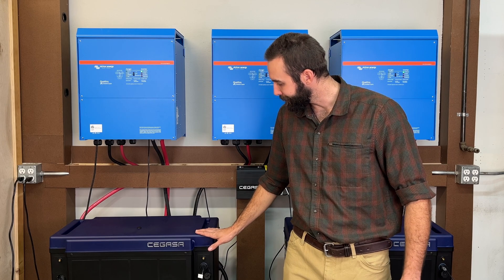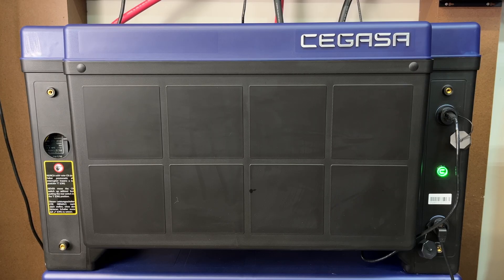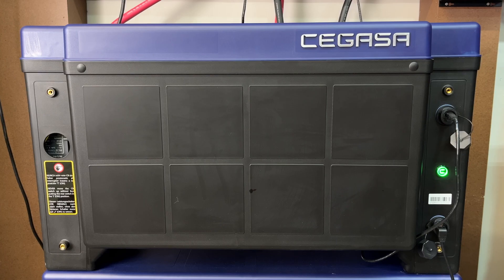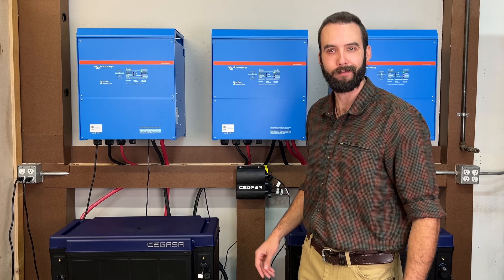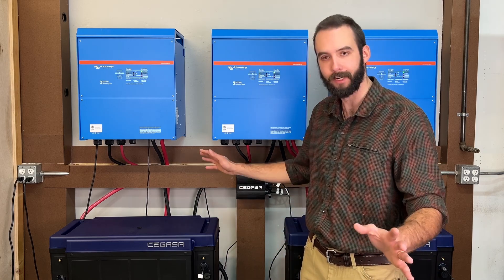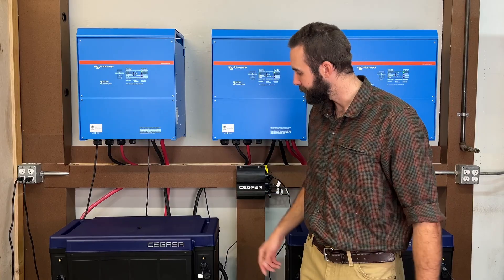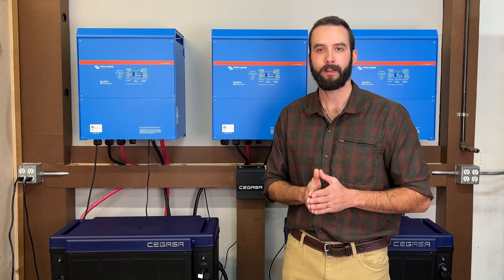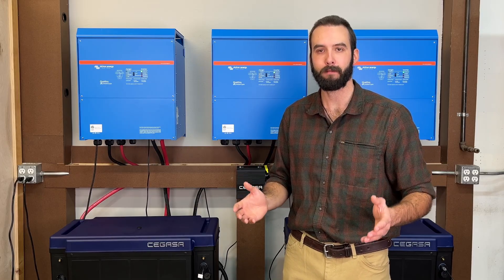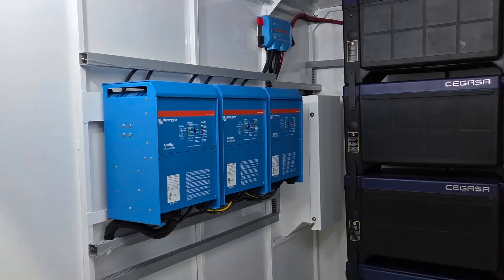As we look here at these batteries behind me, there's a few things that are going to stand out. One is the simplicity. We have come to expect a vast assortment of network ports and dip switches and flashing lights and state of health and state of charge indicators. And those are all missing from the Sagasa battery. That is because Sagasa has focused on the things that matter in the application that they have designed their battery to be utilized in. And that is in a communicating system with modern inverter equipment.